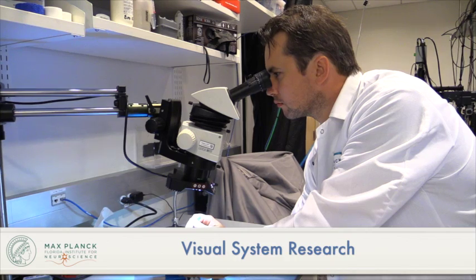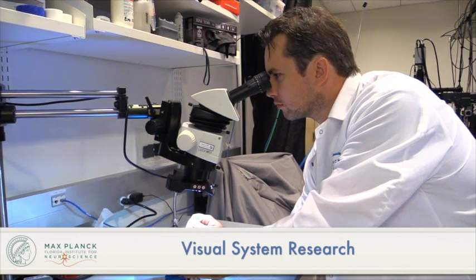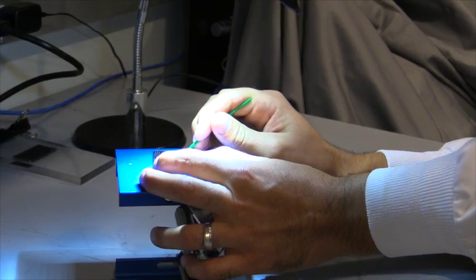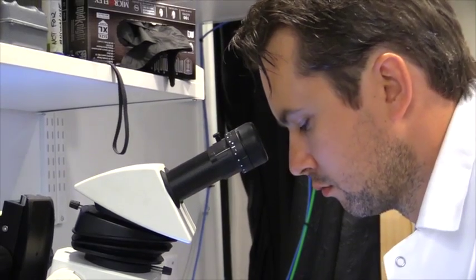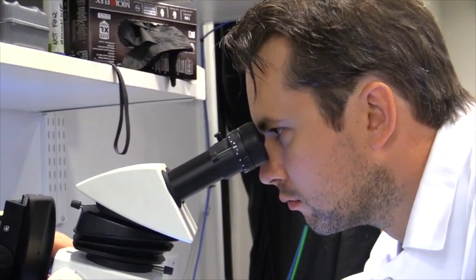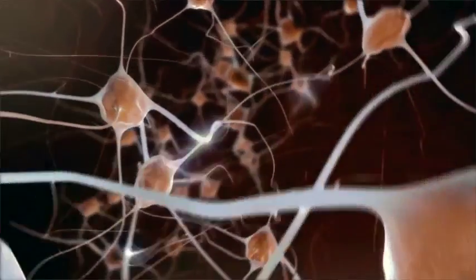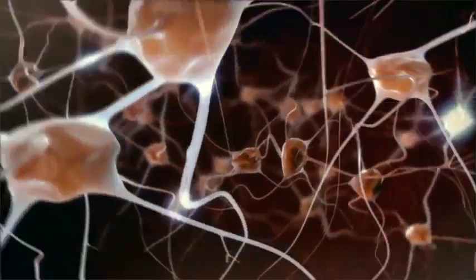We study how experience shapes the development of the visual system and how the visual system uses that experience to be able to process information most efficiently. We use microscopes to look at the functions of individual brain cells and how those brain cells communicate with each other and how those brain cells respond to sensory stimuli.